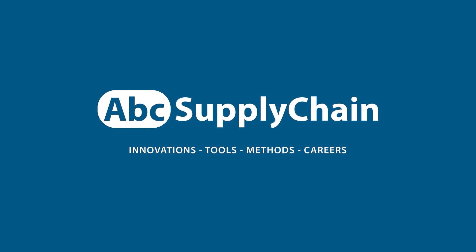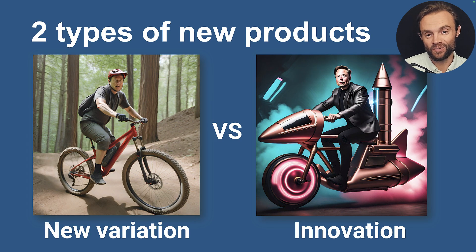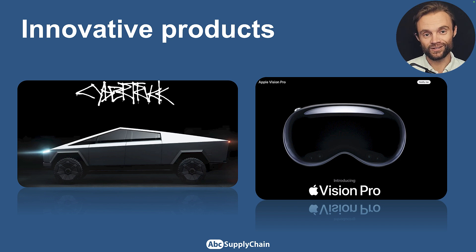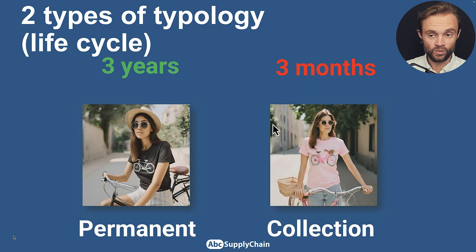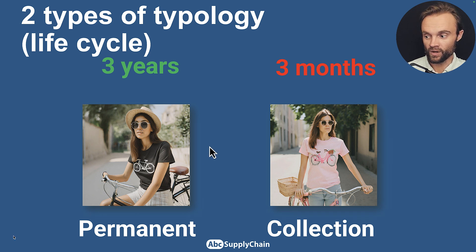This applies to permanent products but also fast fashion products. Is it possible to forecast new products accurately? This is one of the biggest challenges of my professional life. We have very different types of new products: what we call new variations, and innovation products which are very different. Innovative products can be very disruptive for the industry with nothing to compare to — we'll talk about those at the end. We also have products with lifecycle typology: permanent ones that stay maybe two or three years, and fast fashion collection products that need to change all the time. These are much more challenging to forecast.